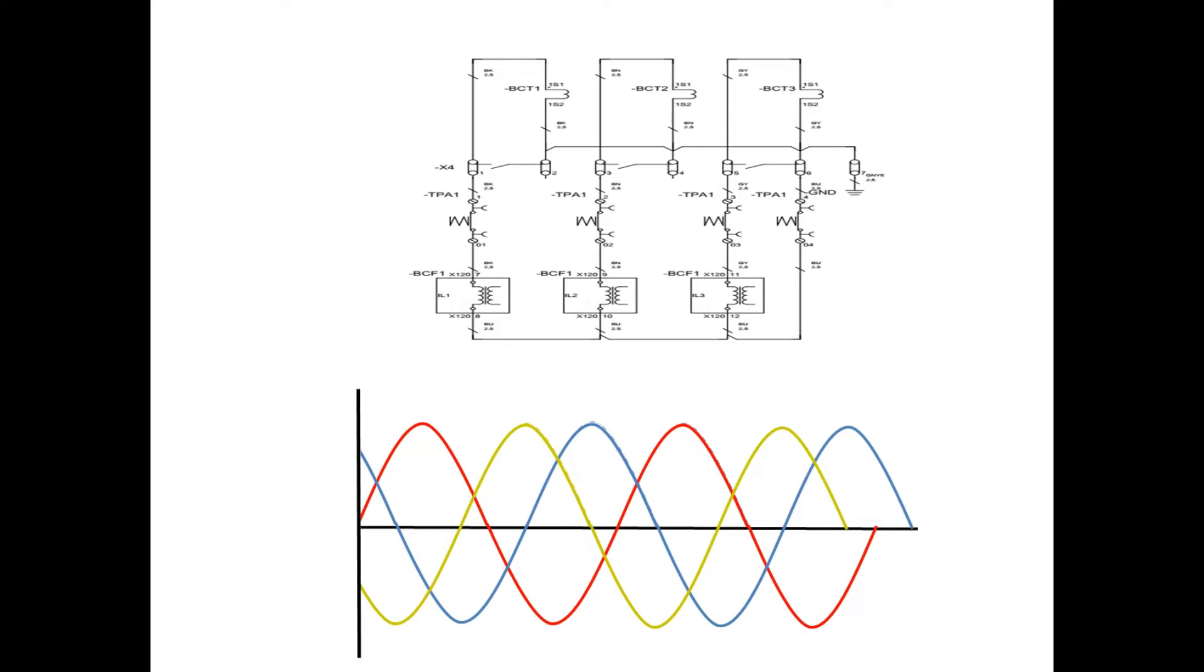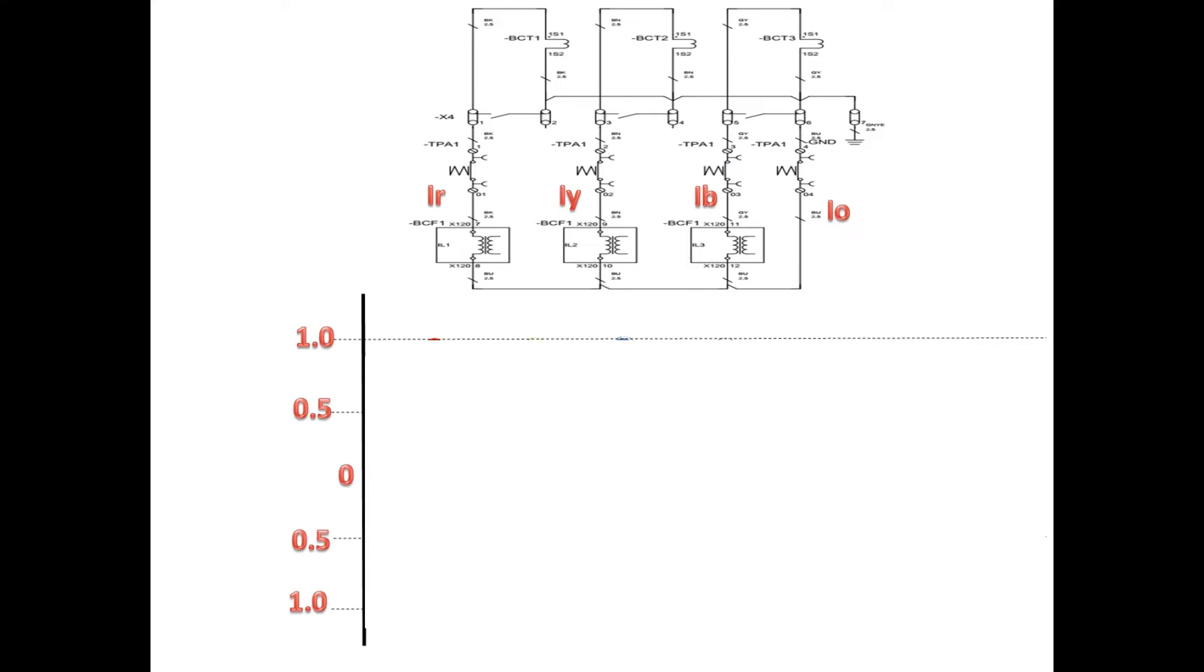On seeing this circuit, we can clearly identify that R phase has three possible ways to have its return path. One way is it can flow through Y phase CT and return to this path, or B phase CT and return to this path, or neutral path. Because the CT connection always has low resistance, the current can flow to all these three paths.